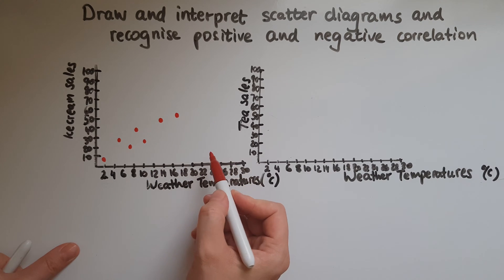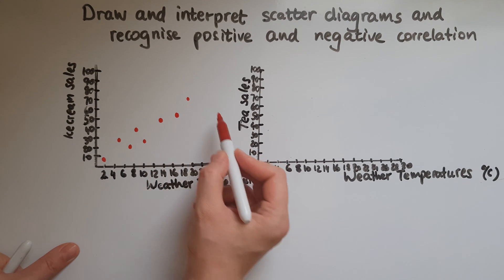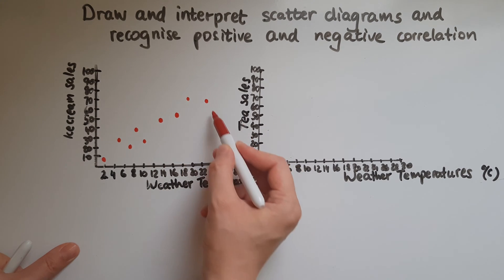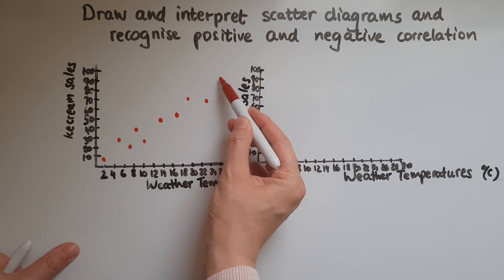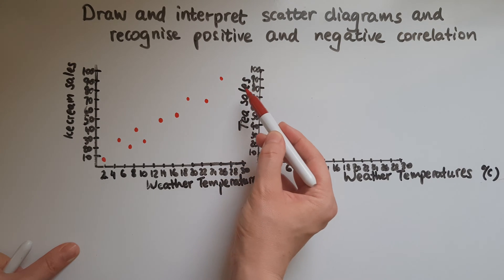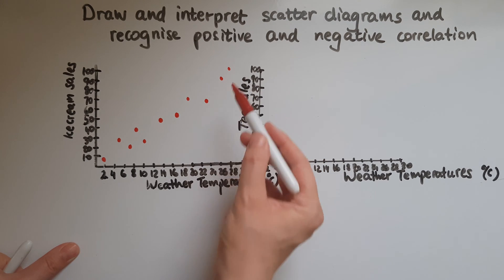So 24 degrees maybe 60, 27 degrees we've got maybe 90, 30 degrees 100.